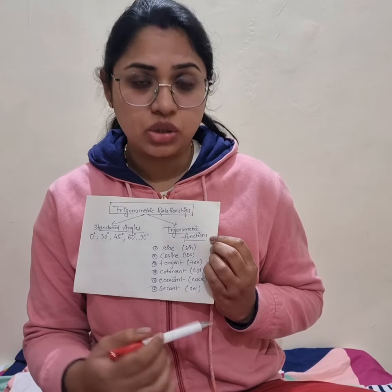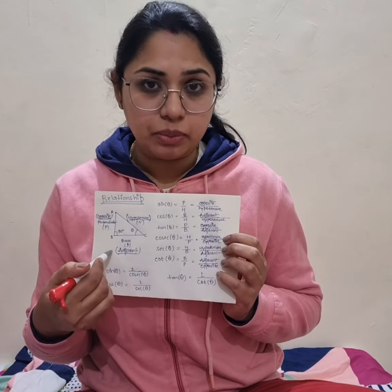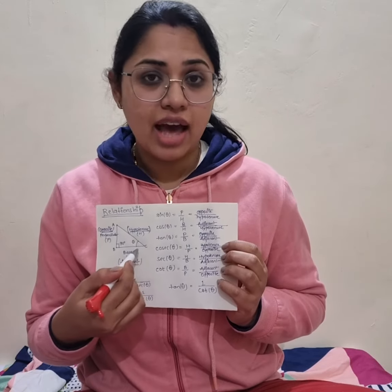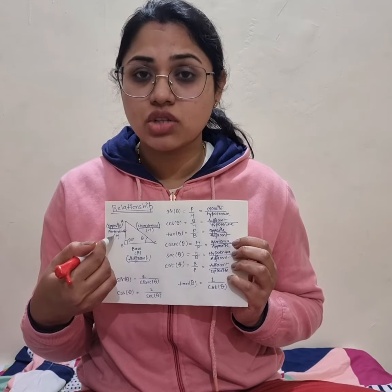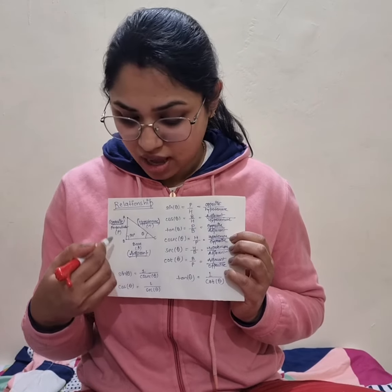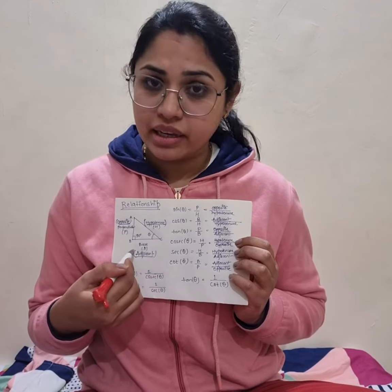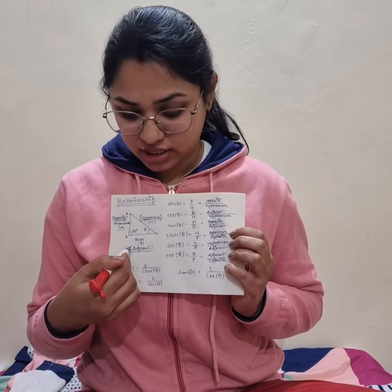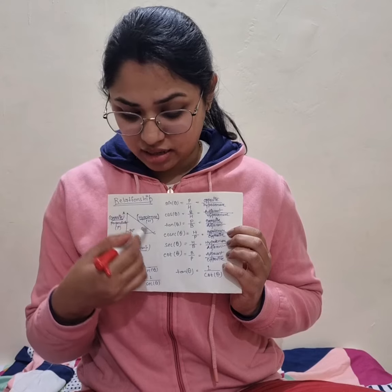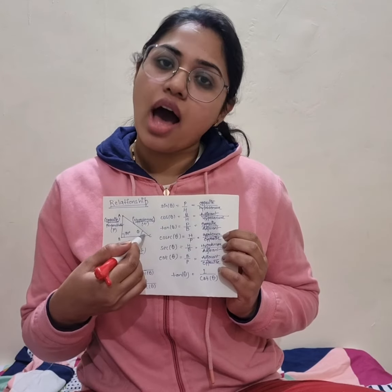Now we will define these trigonometric relationships with respect to the angle theta, which we have already seen in the previous right angle triangle where angle C was named theta. Let me take the same example of right angle triangle ABC, right angled at angle B, with angle theta at angle C. The side opposite to theta is known as perpendicular or opposite, the side adjacent is known as base or adjacent, and the longest side AC is known as the hypotenuse.